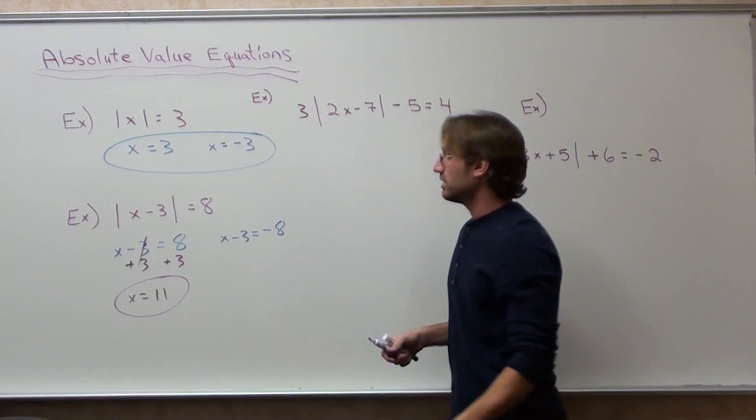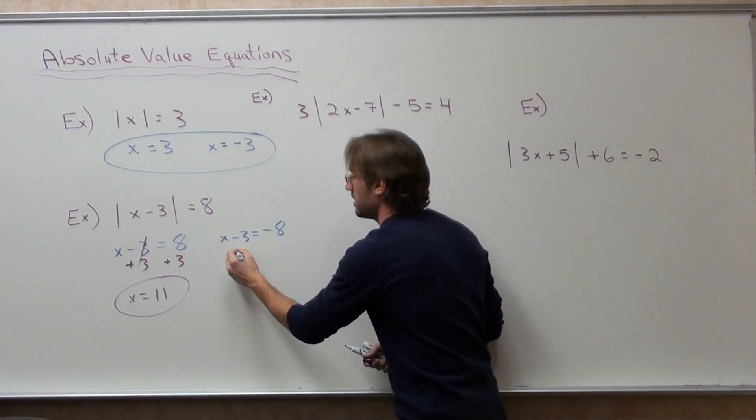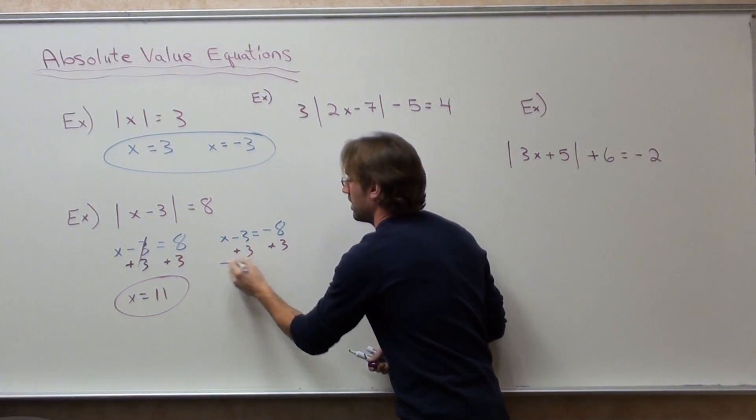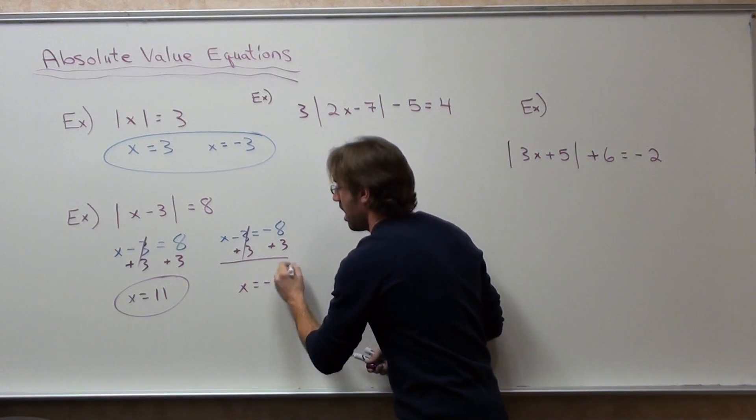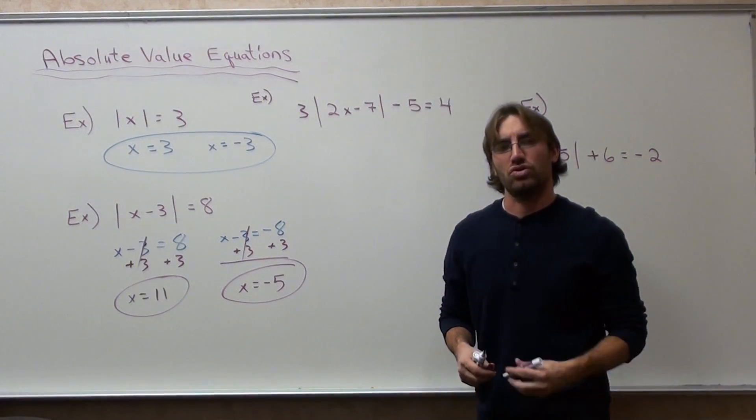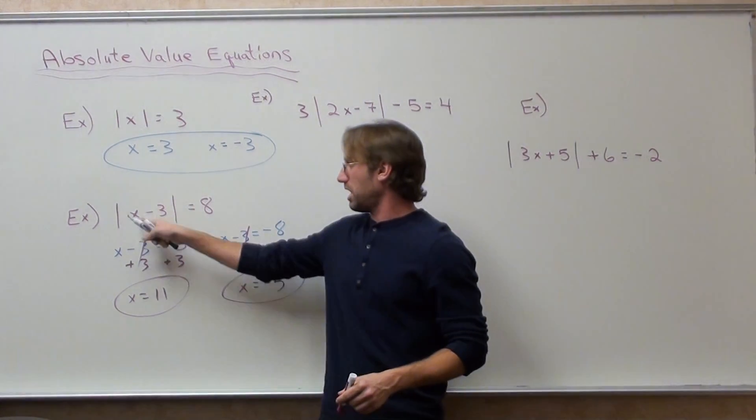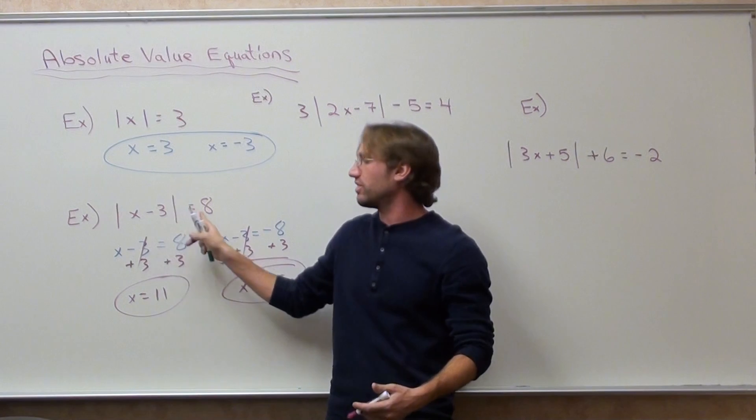X equals 11. Now we're going to add three to both sides. That's not true. Yeah, it is. 11 minus three is eight. Absolute value of eight is eight.